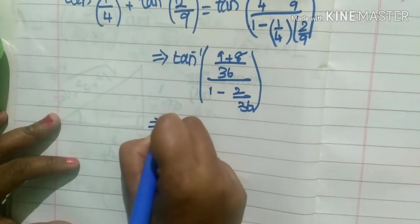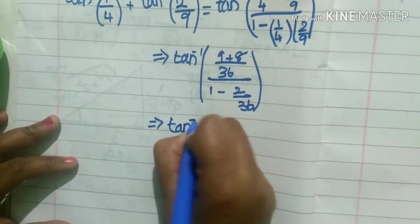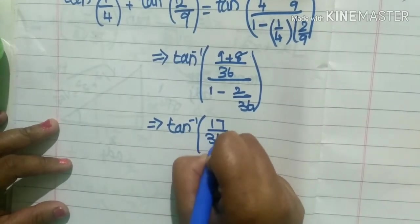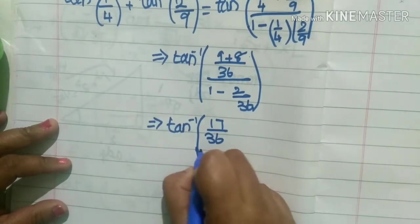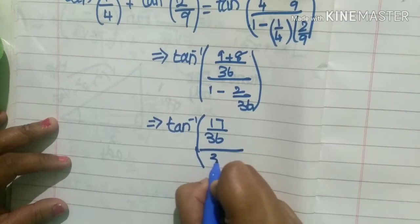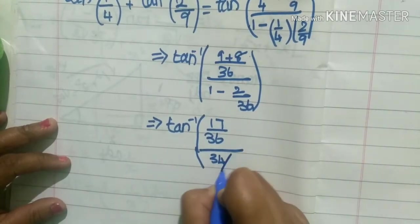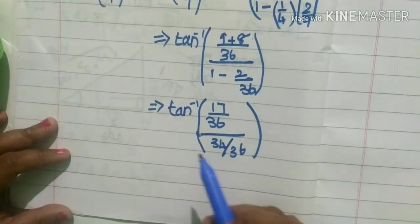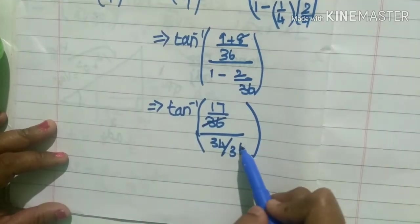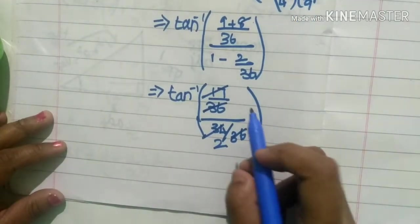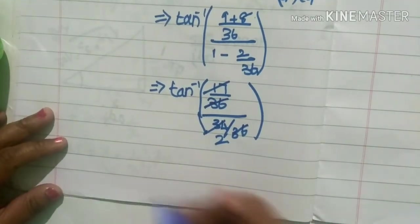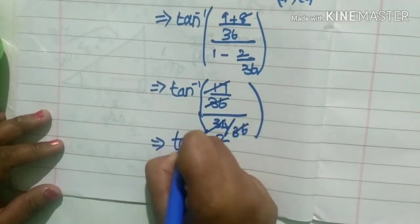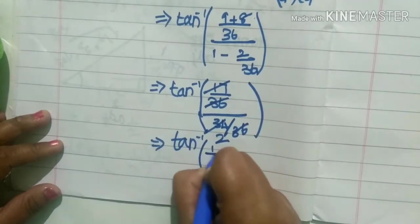On simplifying this, we get tan inverse of 17 by 36, whole divided by 36 minus 2 is 34 divided by 36. Now we cancel 36 in the numerator and 36 in the denominator; 17 multiplied by 2 is 34. So we get tan inverse of 1 by 2.